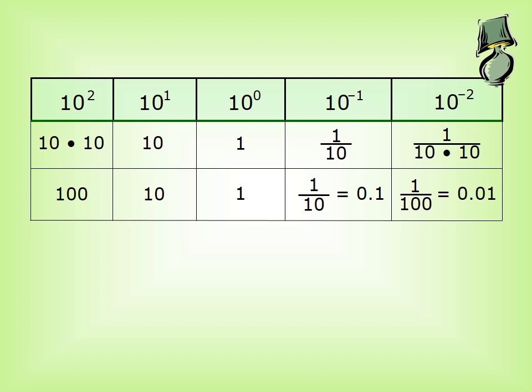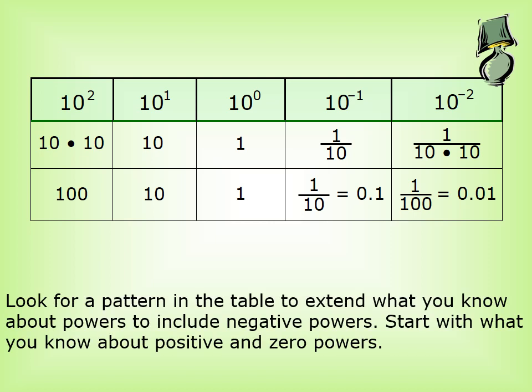Negative integer powers. We want to extend the powers table to include negative powers. Start with what you know about positive and zero powers: 10 power 2 equals 10 times 10 equals 100. 10 power 1 equals 10. 10 power 0 equals 1. Here we notice a pattern.